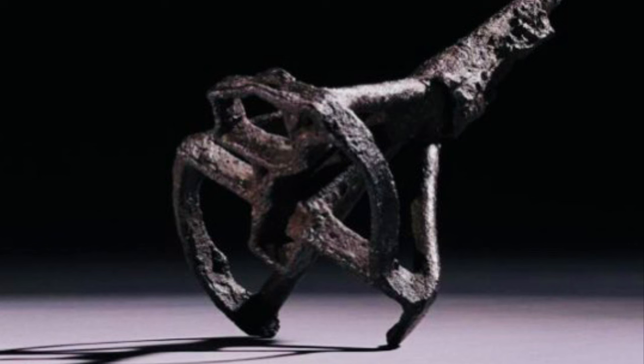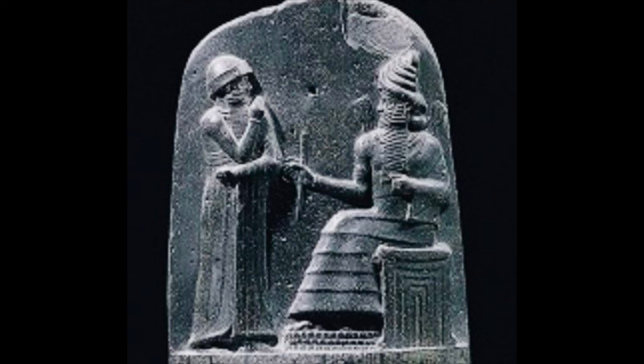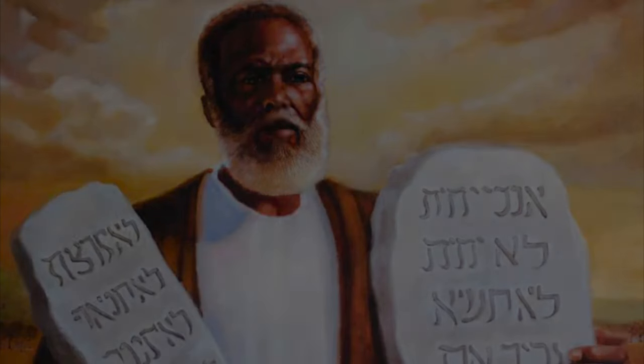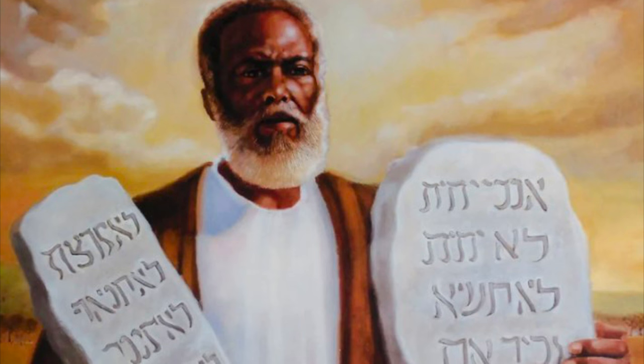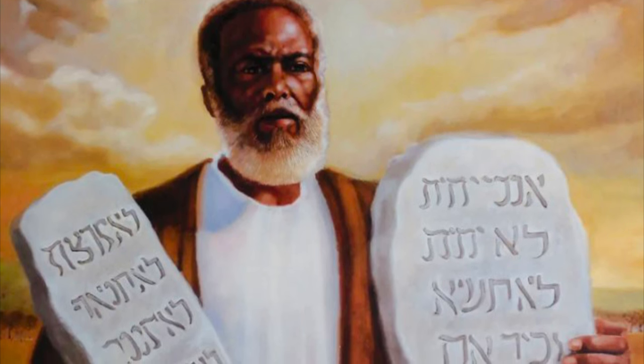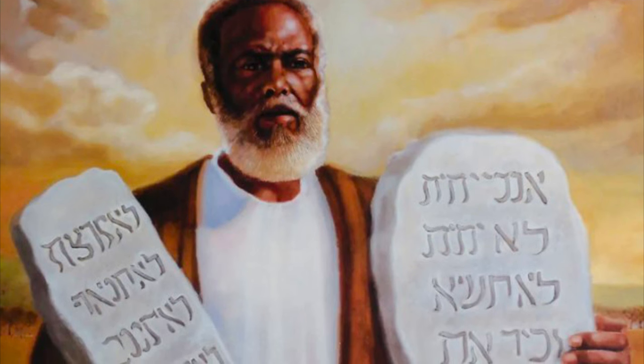The oldest written reference to slavery is in the Hammurabi Code of 1754 BCE — BCE meaning Before Common Era. The reference states that if anyone takes a male or female slave of the court or of a freed man outside the city gates, he shall be put to death. Egyptian slavery is also credited for the famous biblical tale of the Exodus, where the Israelites were led to freedom by Moses — also the earliest known written record of slaves attaining freedom.